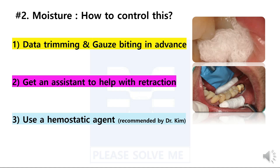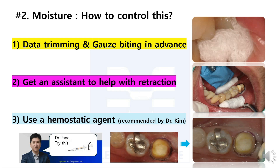Rule three: use this magic item — the hemostatic agent called Dry-Z, as introduced by Dr. Kim. A dry surface can be obtained by applying Dry-Z to the gingival margin and applying pressure with a cotton ball for about two minutes. We always use this item because it almost perfectly inhibits the flow of crevicular fluid, which cannot be done by other moisture control methods. If you follow these three rules, you will be able to complete the scanning mission in a dry state and obtain clearer margins.